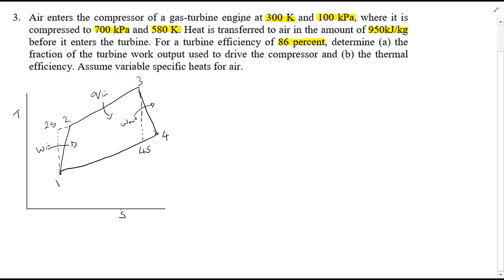Air enters the compressor of a gas turbine at 300 Kelvin, so this is the point T1 here on the TS diagram, and pressure 1 is also given. It's compressed to 700 kPa, so that's P2, and temperature of 580 Kelvin, so that's T2, temperature at 2. Heat is transferred in the amount of 950 kilojoules per kilogram, so this is Q in. This is from points 2 to 3, so this equation is relevant. Turbine efficiency is given of 86 percent. Notice at the end of the question it says assume variable specific heats for air.